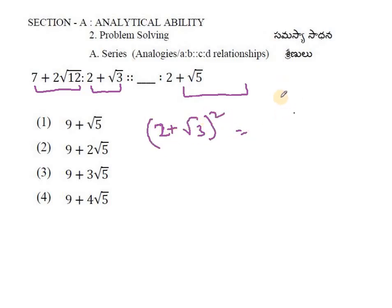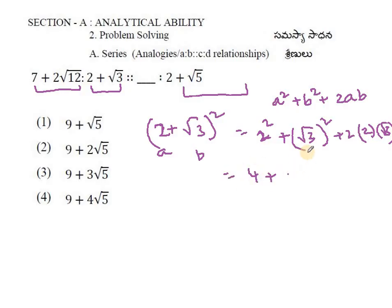Let's try 2 plus root 3 whole square. A plus B whole square is A square plus B square plus 2AB. For those not from mathematical background, here A is 2 and B is root 3. So 2 square is 4, plus root 3 square. Root 3 times root 3 equals 3, plus 2 times 2 times root 3, which is 4 root 3.